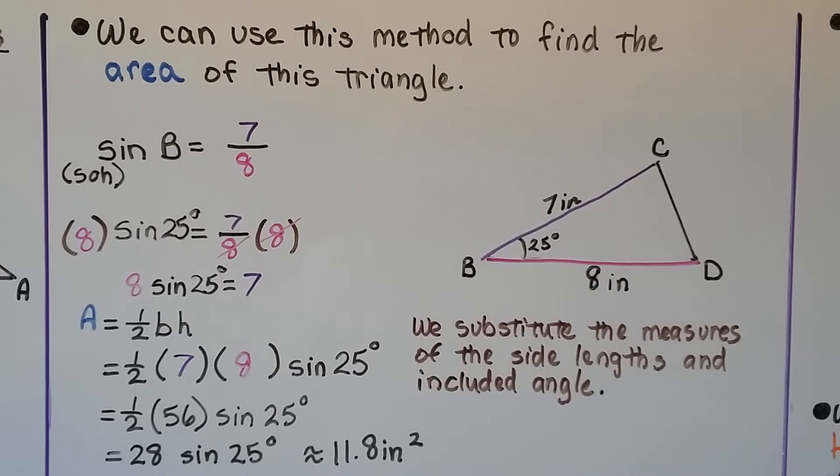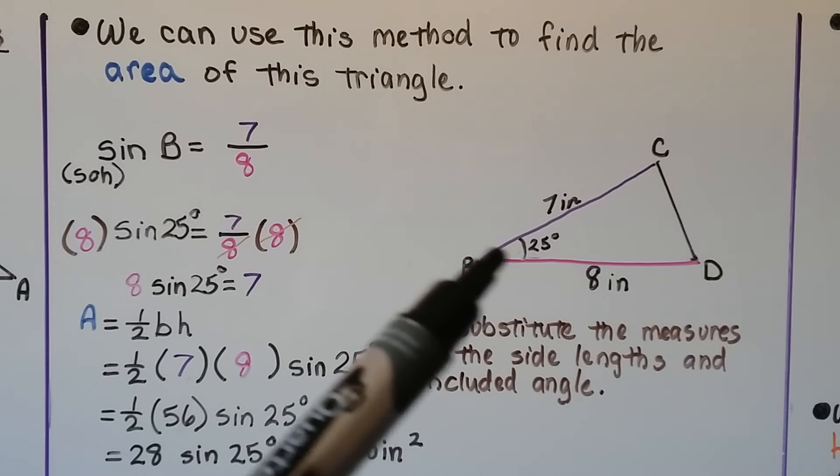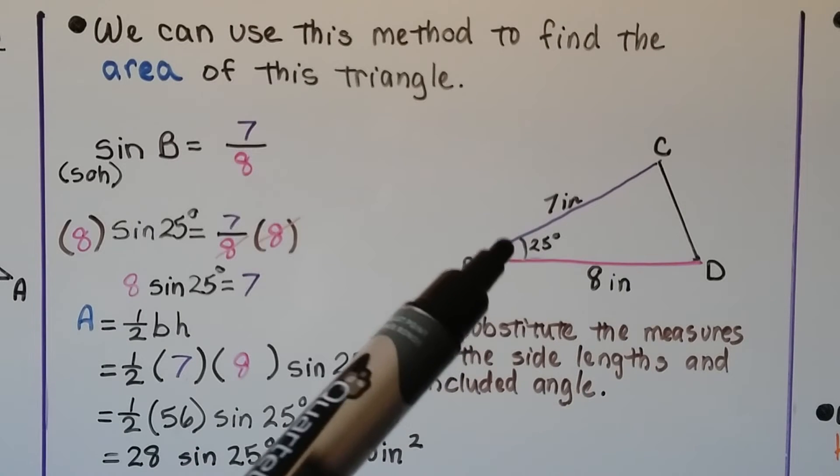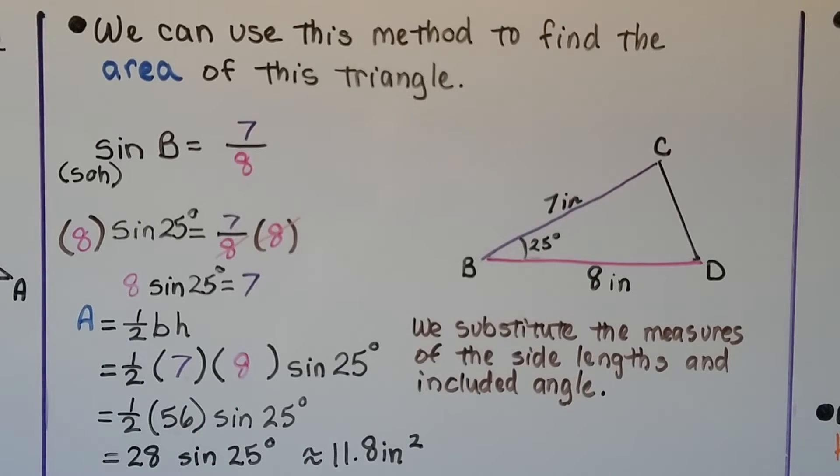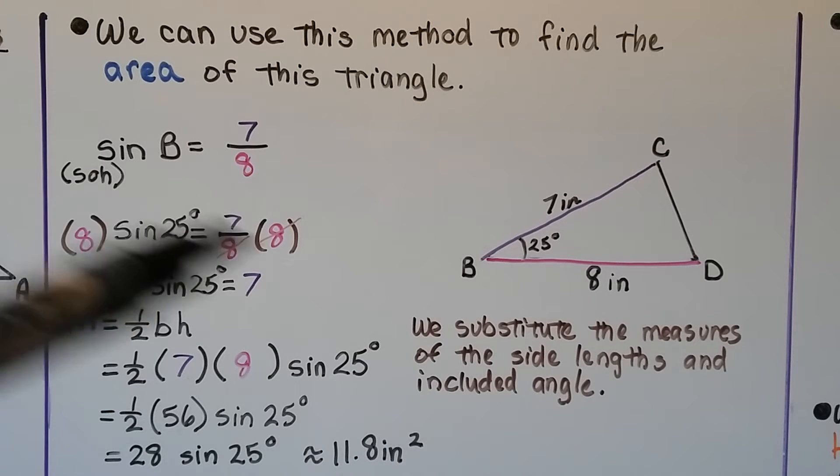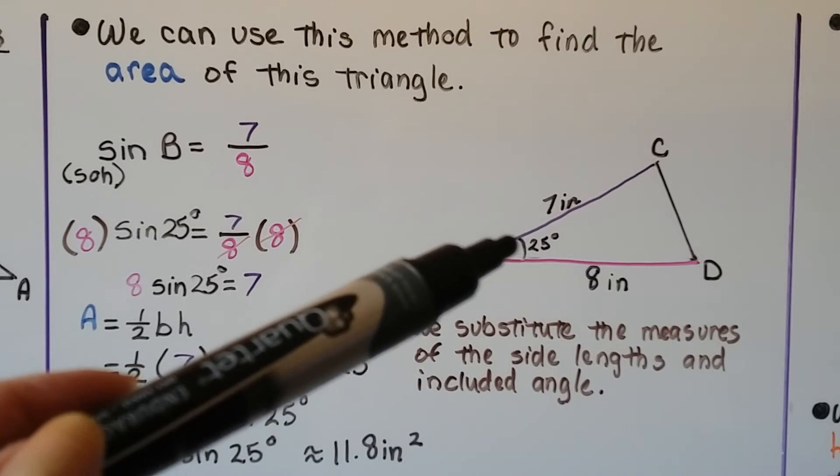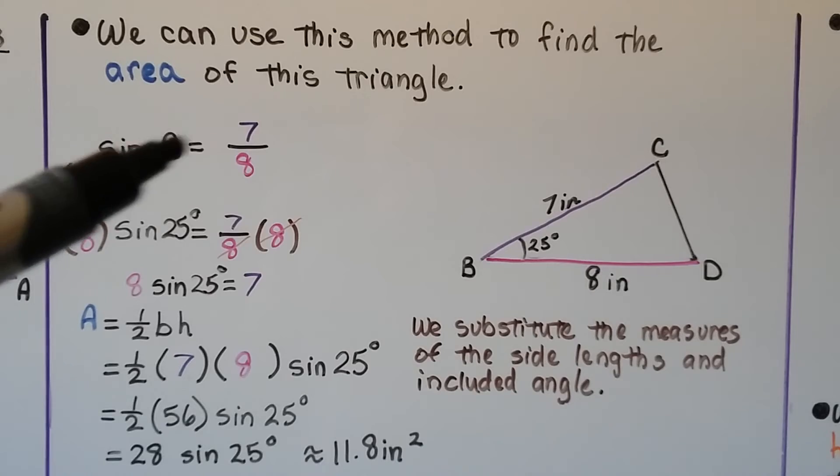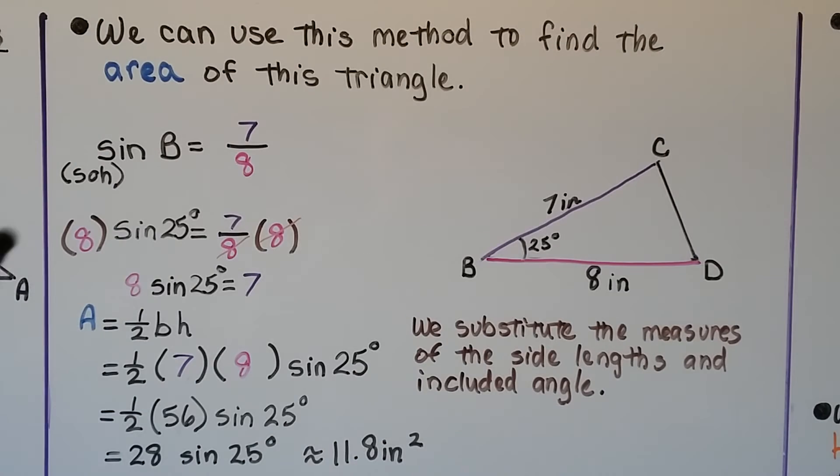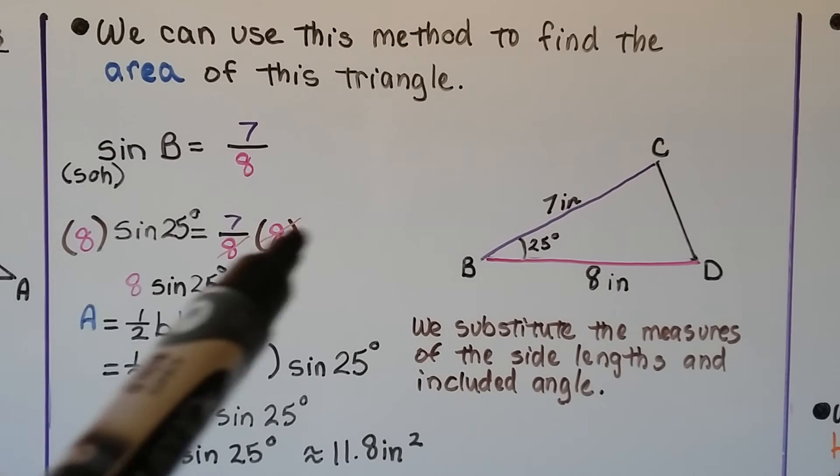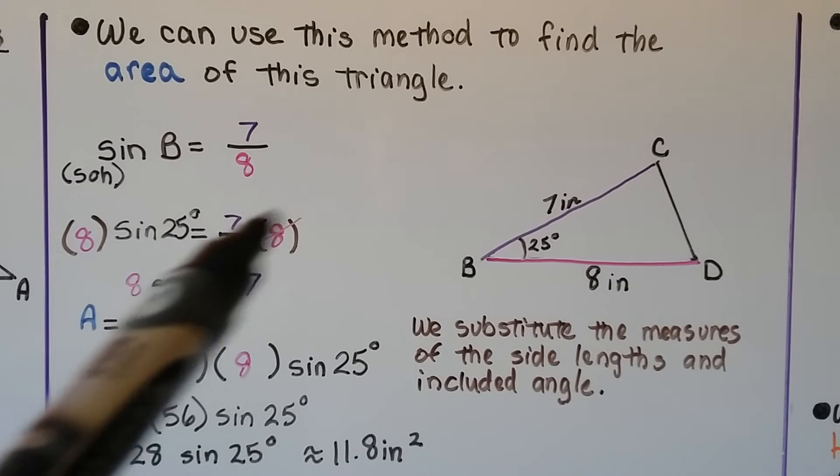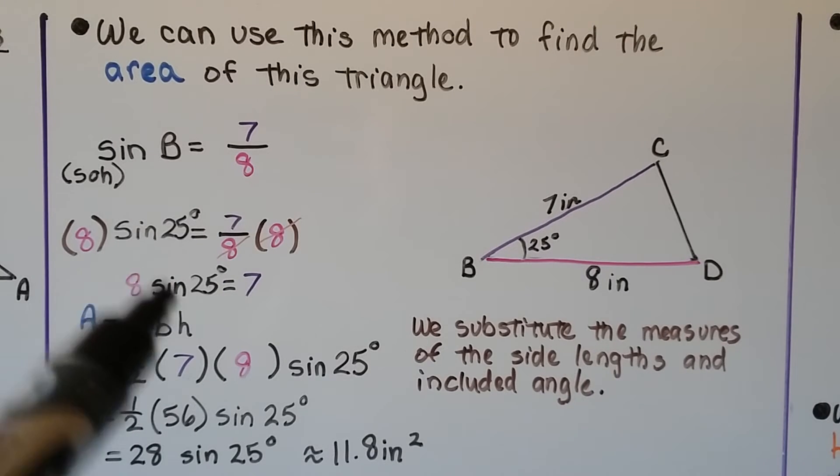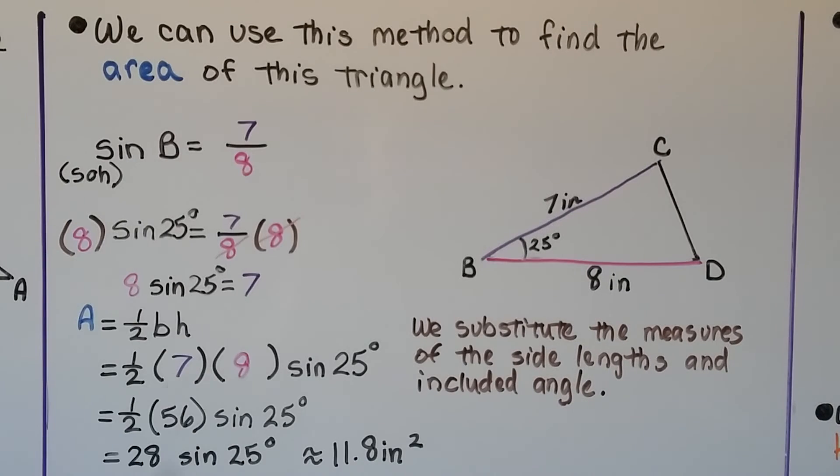And we can use this method to find the area of this triangle. So we're given two sides and an included angle. Remember, the included angle is between those two sides. We have the sine of b, which is 25 degrees, is equal to 7 over 8. We multiply both sides by the 8, that cancels these out. We have 8 sine of 25 is equal to 7.